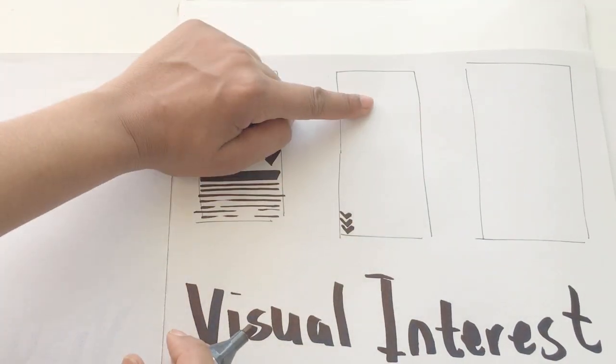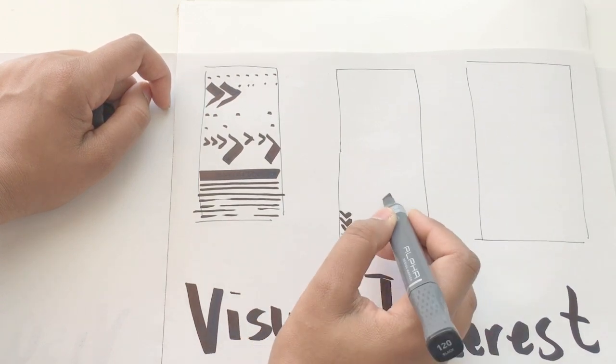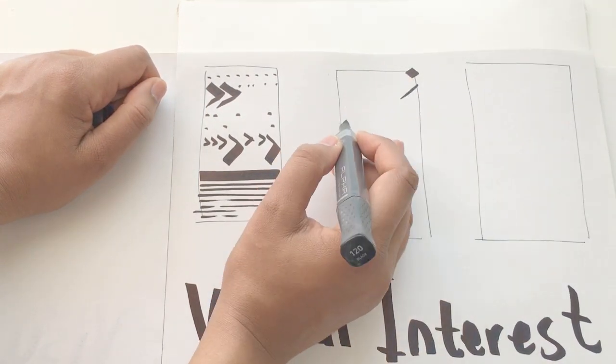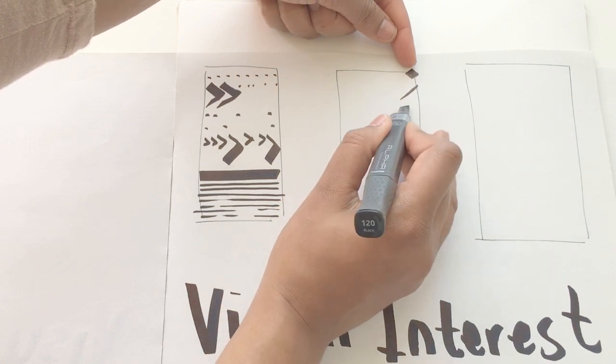The next one is where you're beginning the pattern. Where are you beginning the visual interest? Be sure that it stays, again, consistent and centered to the piece.